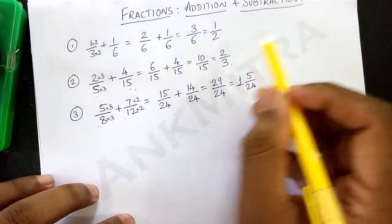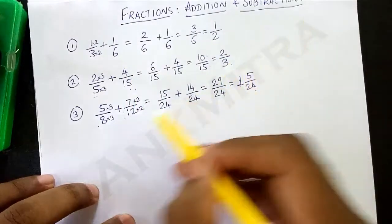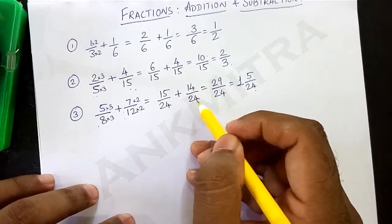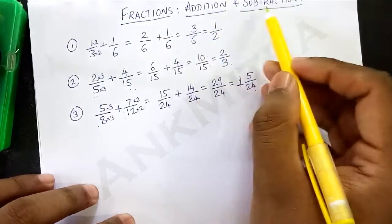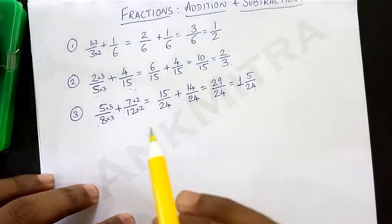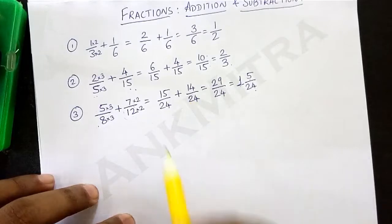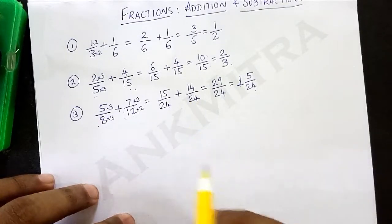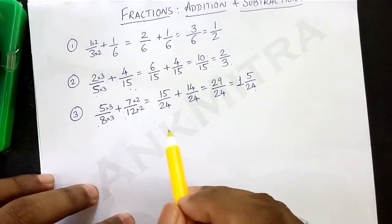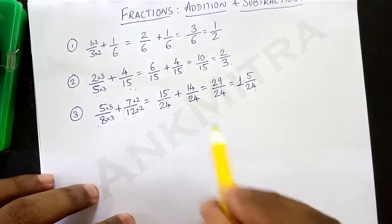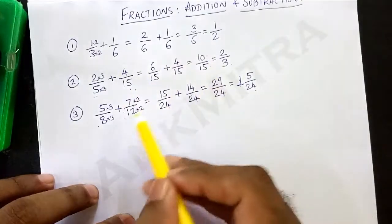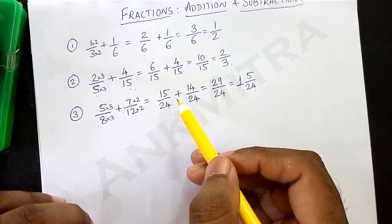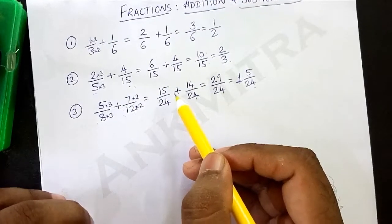The addition and subtraction parts are very similar. The procedure for equating the denominators remains the same whether it is addition or subtraction. Even in case of subtraction, the first thing to be checked is whether the denominators are equal or not. If they are not equal, we are supposed to equate the denominators using a similar procedure. Let us look at another example where we will be subtracting instead of adding.